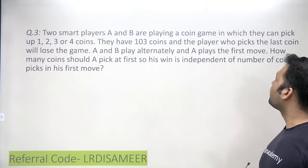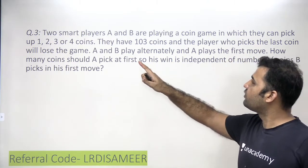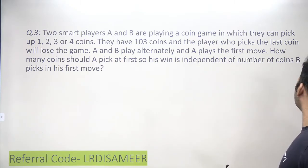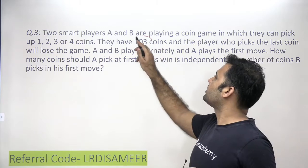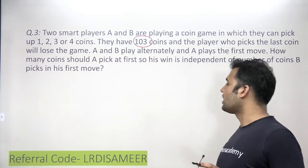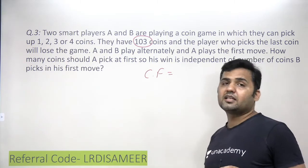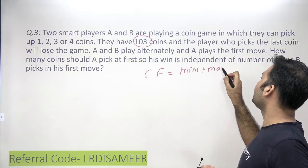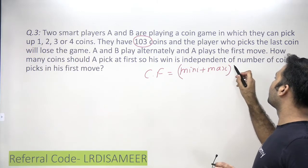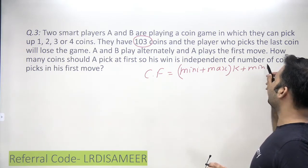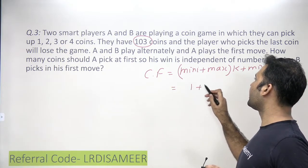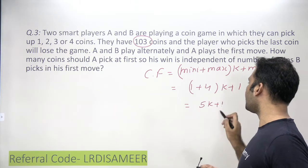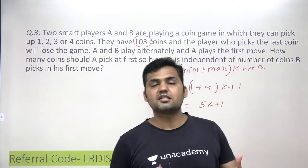Two smart players A and B are playing a coin game in which they can pick 1, 2, 3, or 4 coins. They have 103 coins and the player who picks the last one will lose the game. To solve this, I decide the controlling factor for A. The direct method: minimum plus maximum multiplied by k plus minimum, which gives 1 plus 4 into k plus 1, so the controlling factor is 5k plus 1.